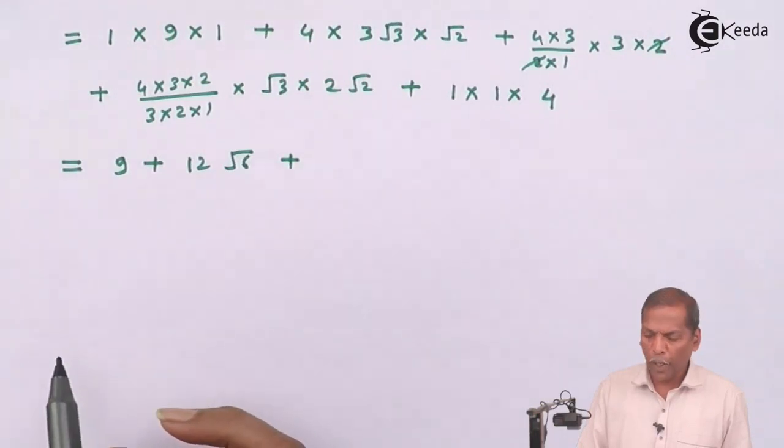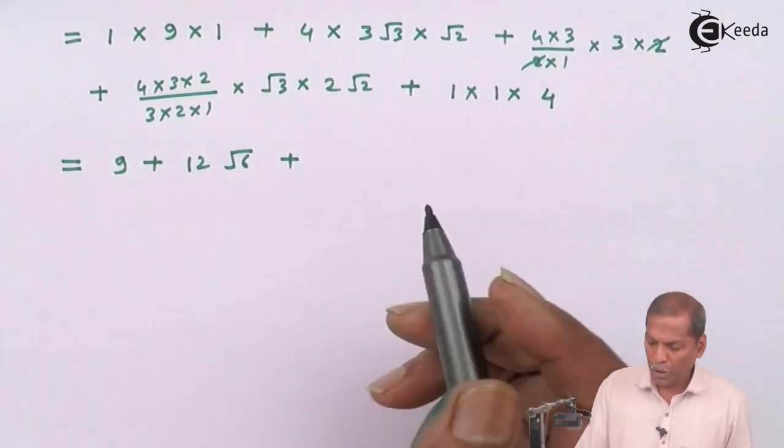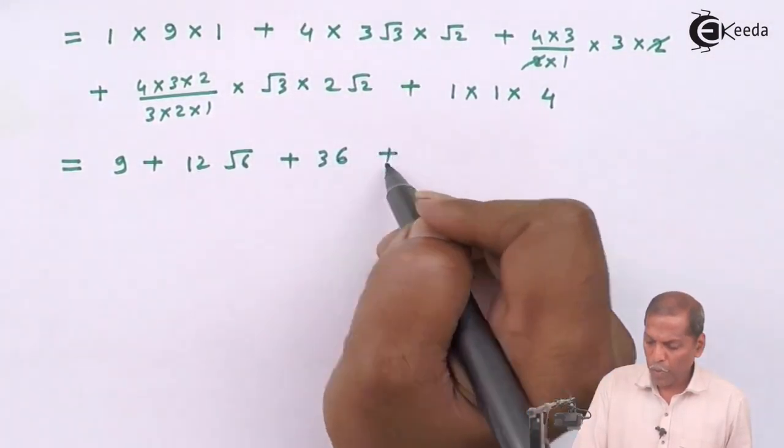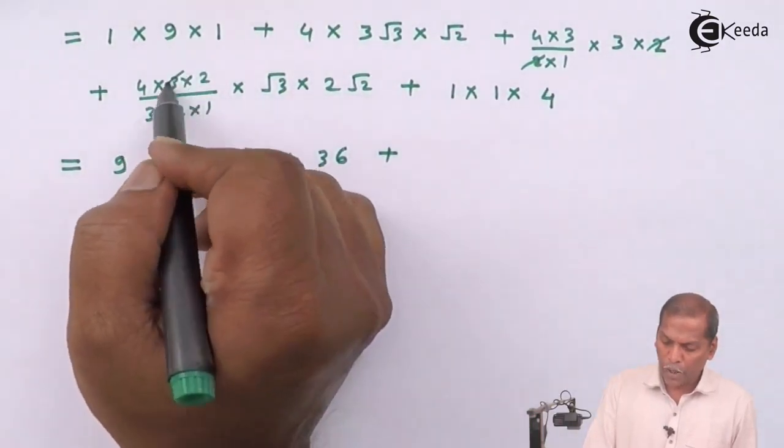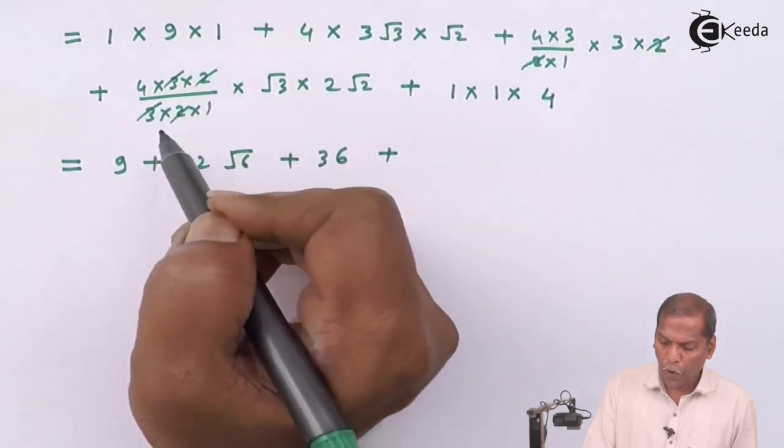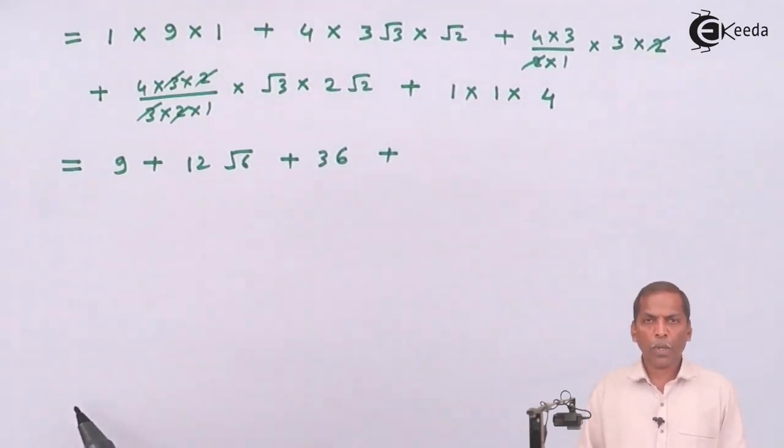Plus in third term we cancel 2 from numerator denominator so we left with 4 into 3, 12 into 3, 36. Plus now in the next term we cancel 3 from numerator denominator.